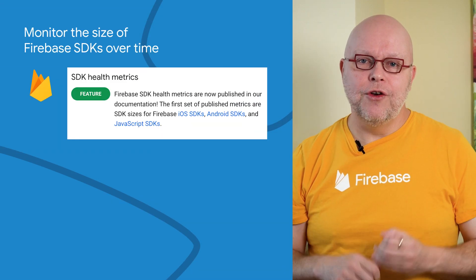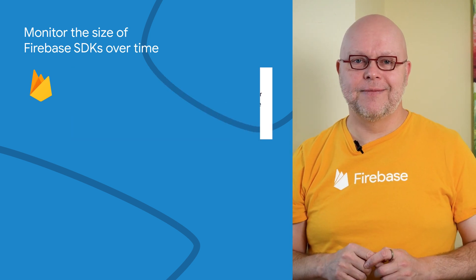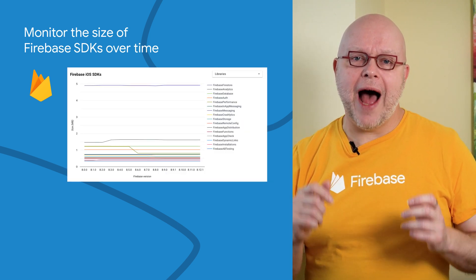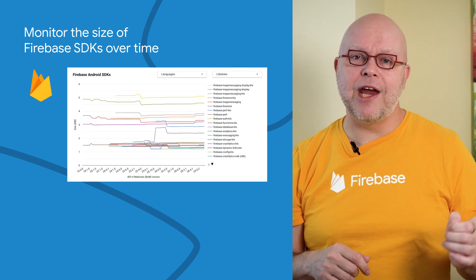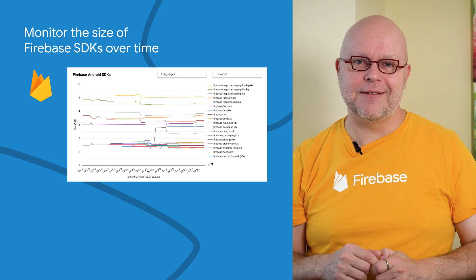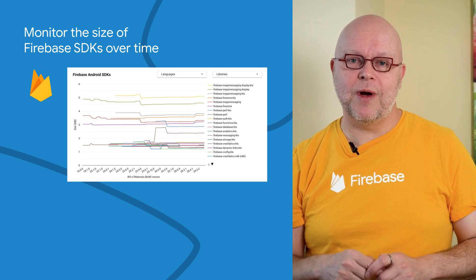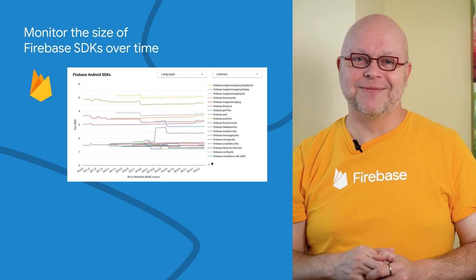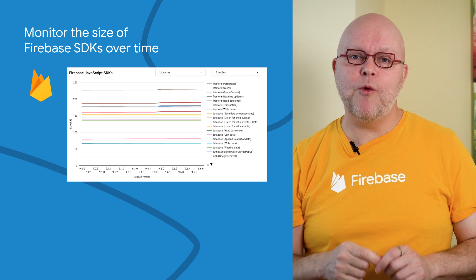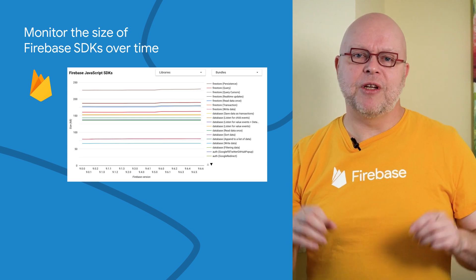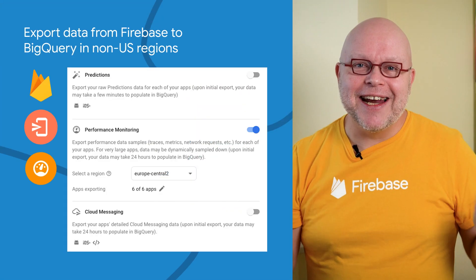We just added new pages to our documentation that show health metrics for our SDKs. These new graphs show how the binary size of each SDK has changed over time, specifically for the iOS, Android, and JavaScript SDKs. We intend to add the same information for more of our SDKs as well as other helpful metrics. Keep in mind that these sizes are not necessarily how much bigger your app will be when you add the Firebase feature, but only show how the SDK size has changed over time.